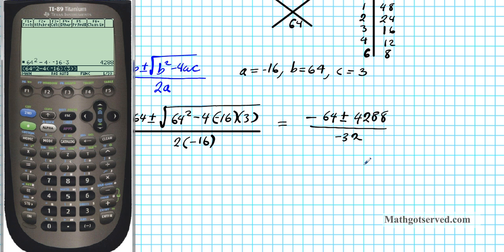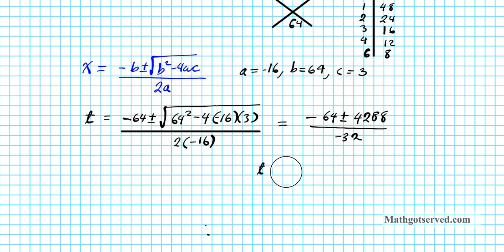So we have 2 potential solutions here. We're going to be using a calculator for this one because we're going to be accepting an approximate answer. So t is either going to be negative 64 minus the square root of 4,288 over negative 32, or it could be negative 64 plus the square root of 4,288 divided by negative 32.